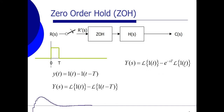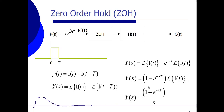We can rewrite this expression: Y in the s domain is (1 minus e to the power minus sT) times the Laplace transform of a unity step. The Laplace transform of a unity step is 1 over s. So we get Y in the s domain equals (1 minus e to the power minus sT) divided by s. That is the Laplace transform — and therefore the transfer function — of that zero-order hold block.